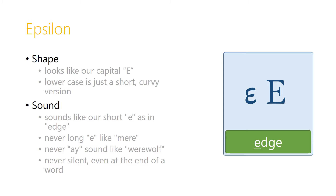The letter epsilon is the equivalent of our letter E. The uppercase looks just like our capital E, and the lowercase looks like a curvy version of our uppercase E. The sound is always a short E, as in edge — eh. It's never a long E as in mere, and it never says 'a' like in werewolf. It's also never silent, so even if you see an epsilon at the end of a word, it always has a sound to it. You always say the eh sound.